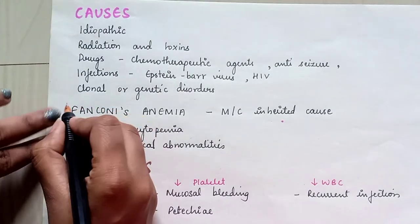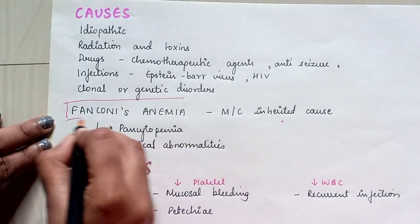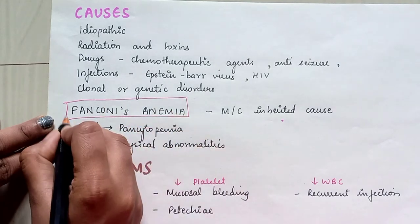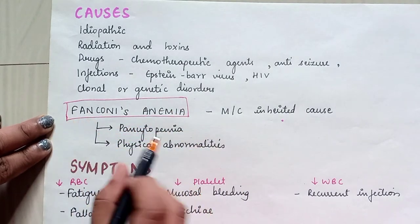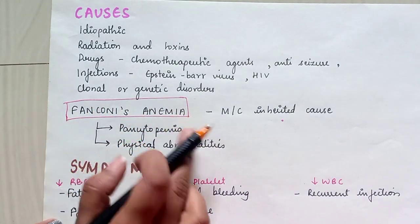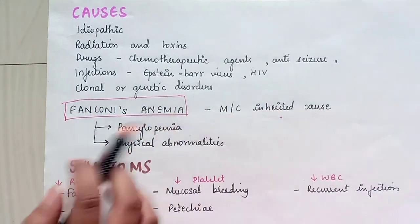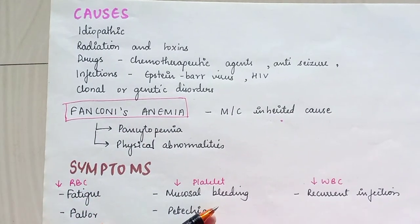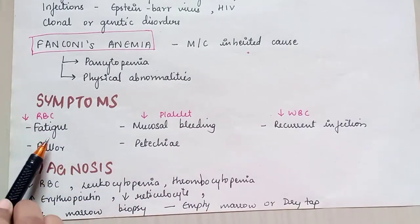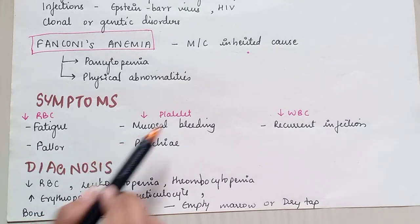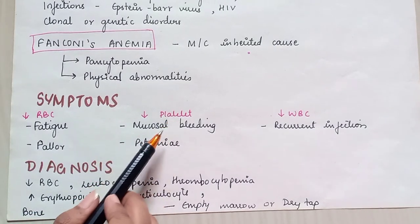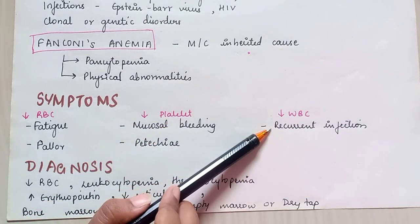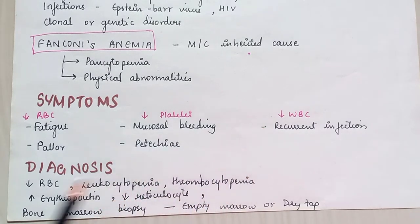One important cause to remember is Fanconi's anemia. It is most commonly an inherited cause, presenting with pancytopenia and physical abnormalities. Symptoms of aplastic anemia include: decreased RBC leading to pallor, decreased platelets leading to mucosal bleeding and petechiae, and decreased WBC leading to recurrent infections.